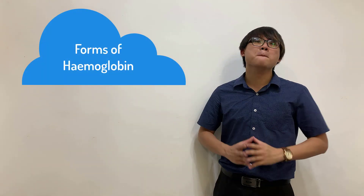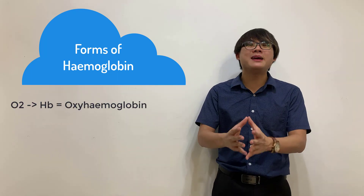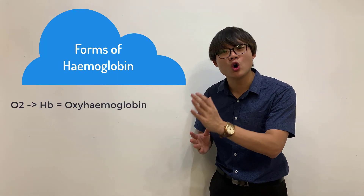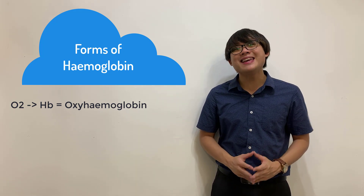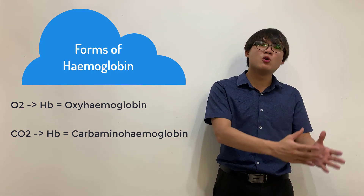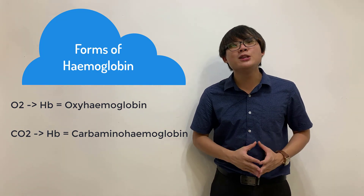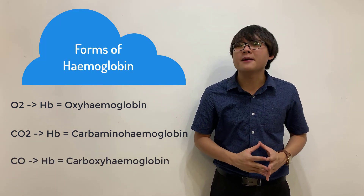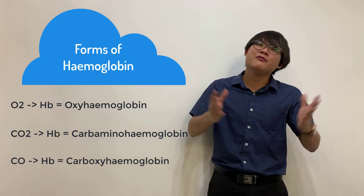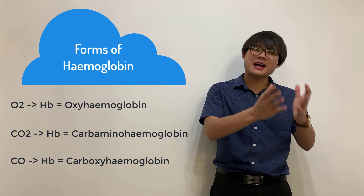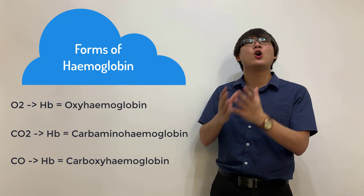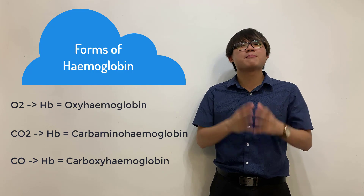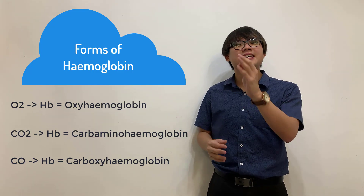This is some bonus information for you. In SPM, there are three forms of hemoglobin that you must understand. When oxygen binds to hemoglobin, it forms oxyhemoglobin. When carbon dioxide binds, it forms carbaminohemoglobin. Last but not least, we have a competitor called carbon monoxide. It competes with oxygen, and unfortunately hemoglobin has a higher affinity towards carbon monoxide — meaning it prefers carbon monoxide over oxygen. When carbon monoxide binds to hemoglobin, it forms carboxyhemoglobin.